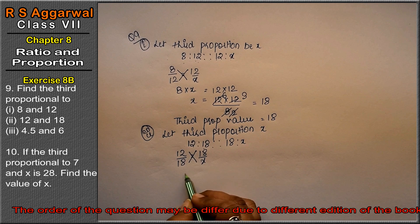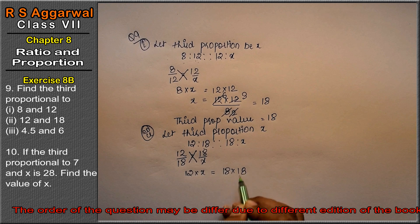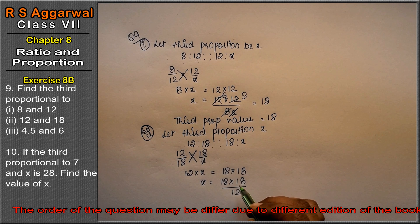Cross multiply. 12 into x equals to 18 into 18. How much is the value of x? 18 into 18 upon 12. Now look.